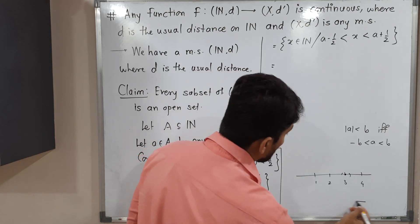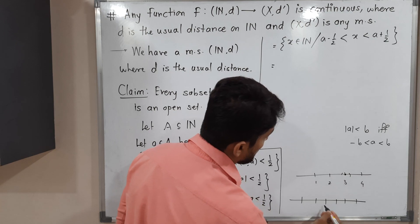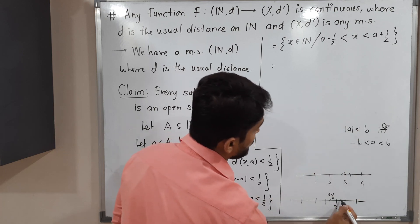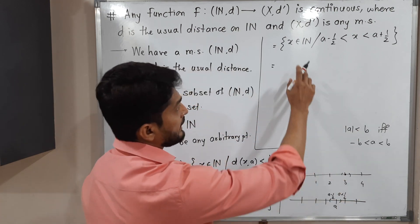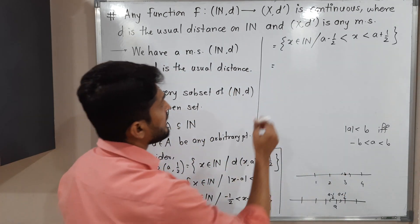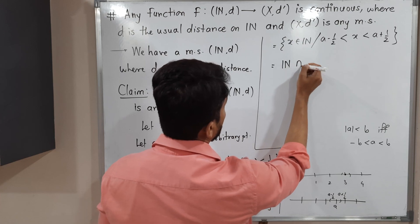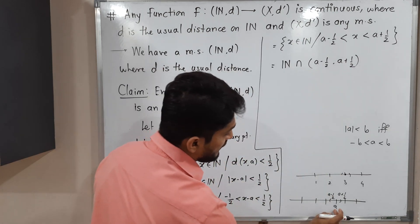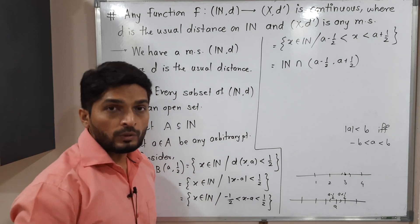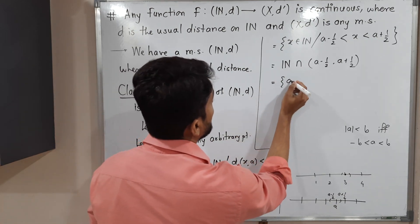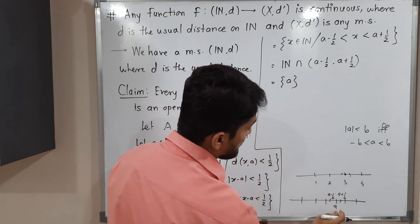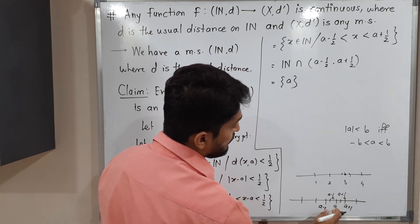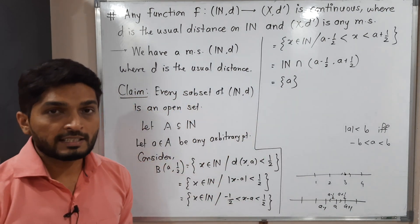Let me show this in the diagram. We have natural numbers, and 'a' is one of them. a − 1/2 will be somewhere here and a + 1/2 will be somewhere here. We are collecting natural numbers lying in this interval, which can be written as N ∩ (a − 1/2, a + 1/2). In this interval, 'a' is the only natural number, since the previous natural number is a − 1 and the next is a + 1. So no natural number other than 'a' lies in this interval, and the intersection is the singleton {a}.